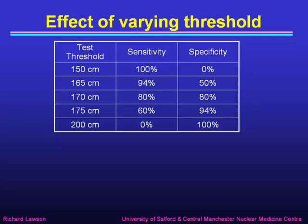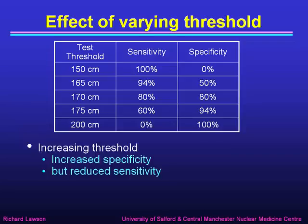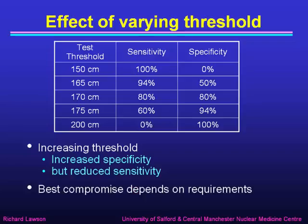By varying the threshold, we can get a whole range of sensitivities and specificities. If we reduce the threshold all the way down to 150 centimetres, we get 100% sensitivity — all the men are taller than that — but unfortunately we have zero specificity, because so are all the women. At 165 centimetres: 94% sensitivity and 50% specificity. At 170 centimetres: 80% sensitivity and 80% specificity. At 175 centimetres: 60% sensitivity and 94% specificity. And at 200 centimetres: 0% sensitivity but 100% specificity. Clearly, increasing the threshold increases the specificity but reduces the sensitivity, so we have to choose the best compromise somewhere in the middle.